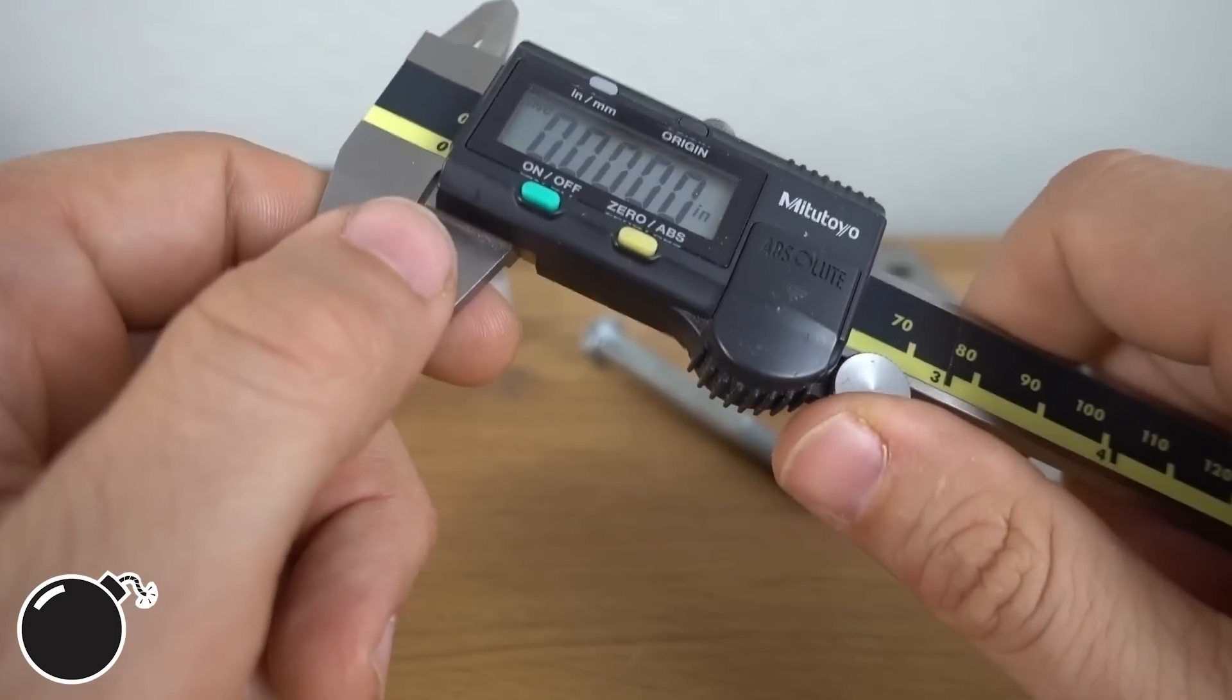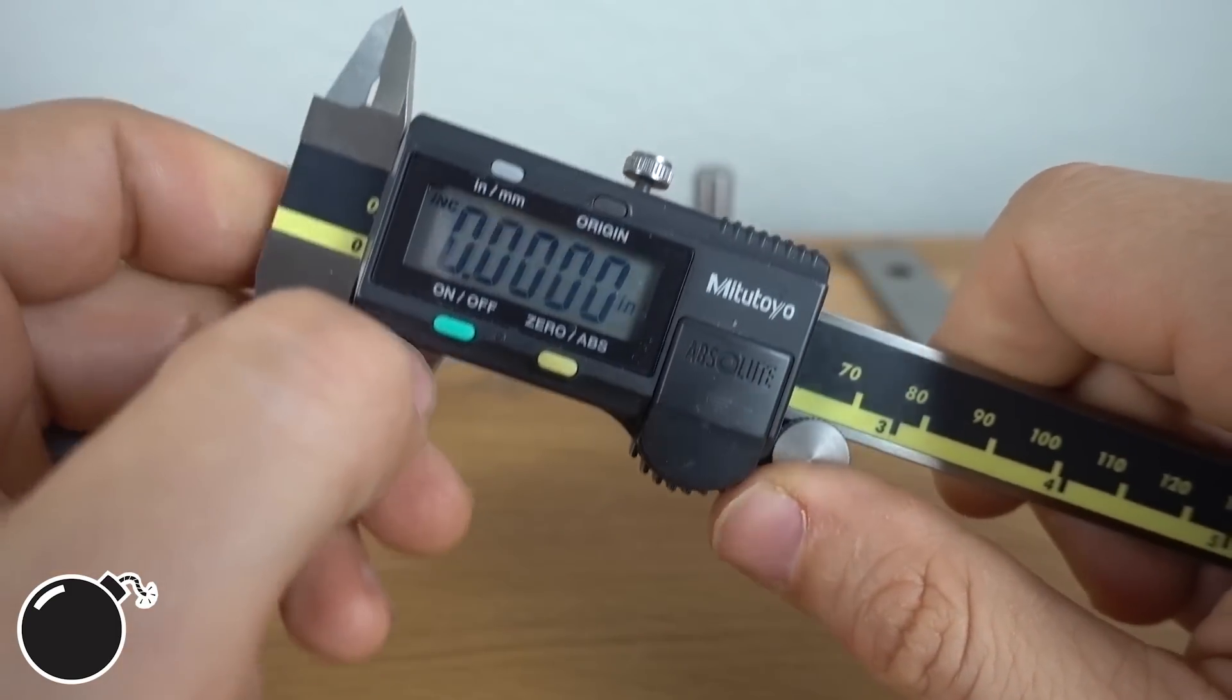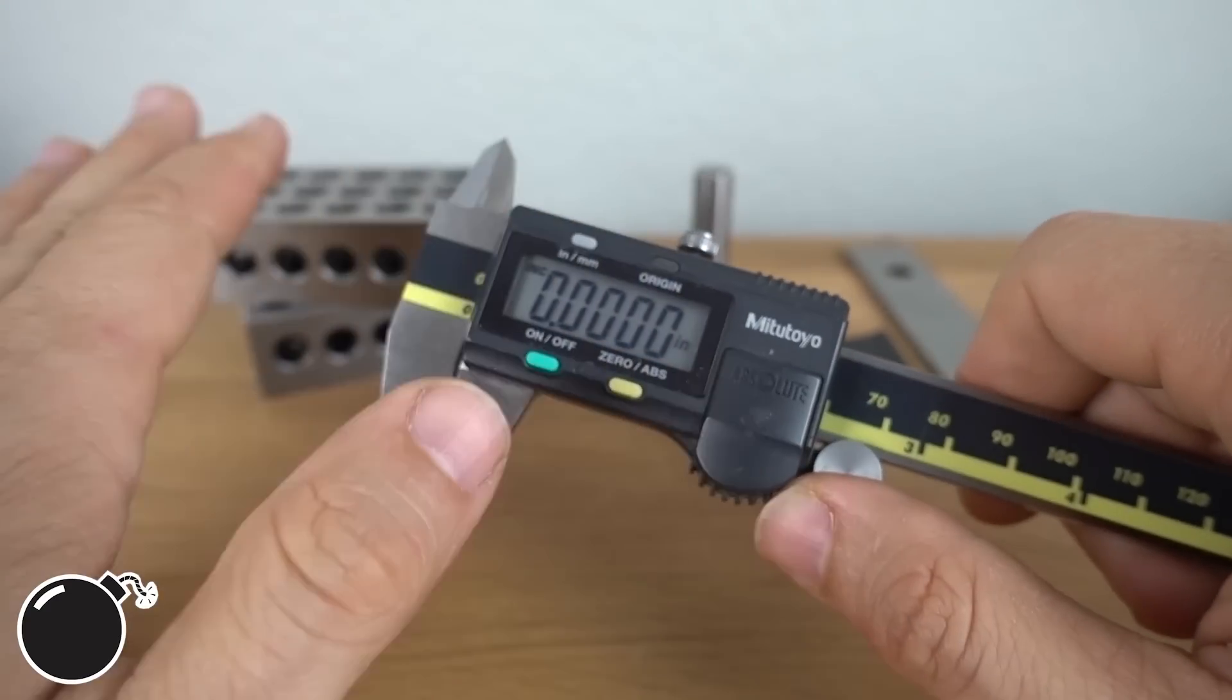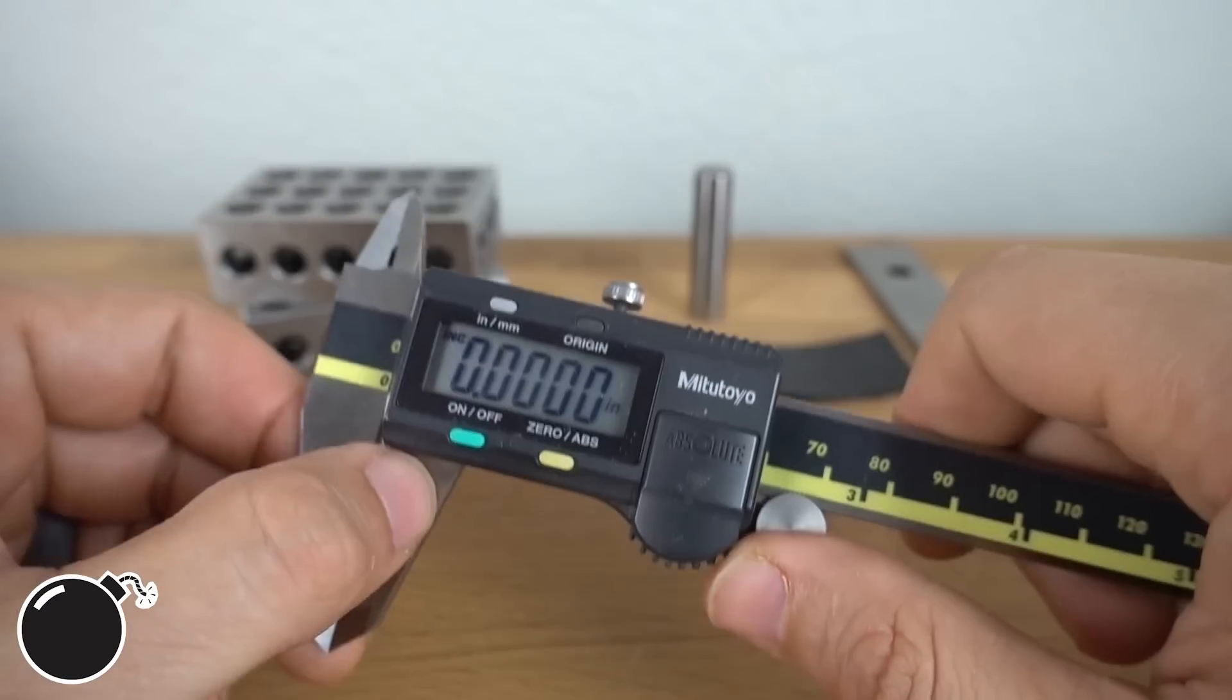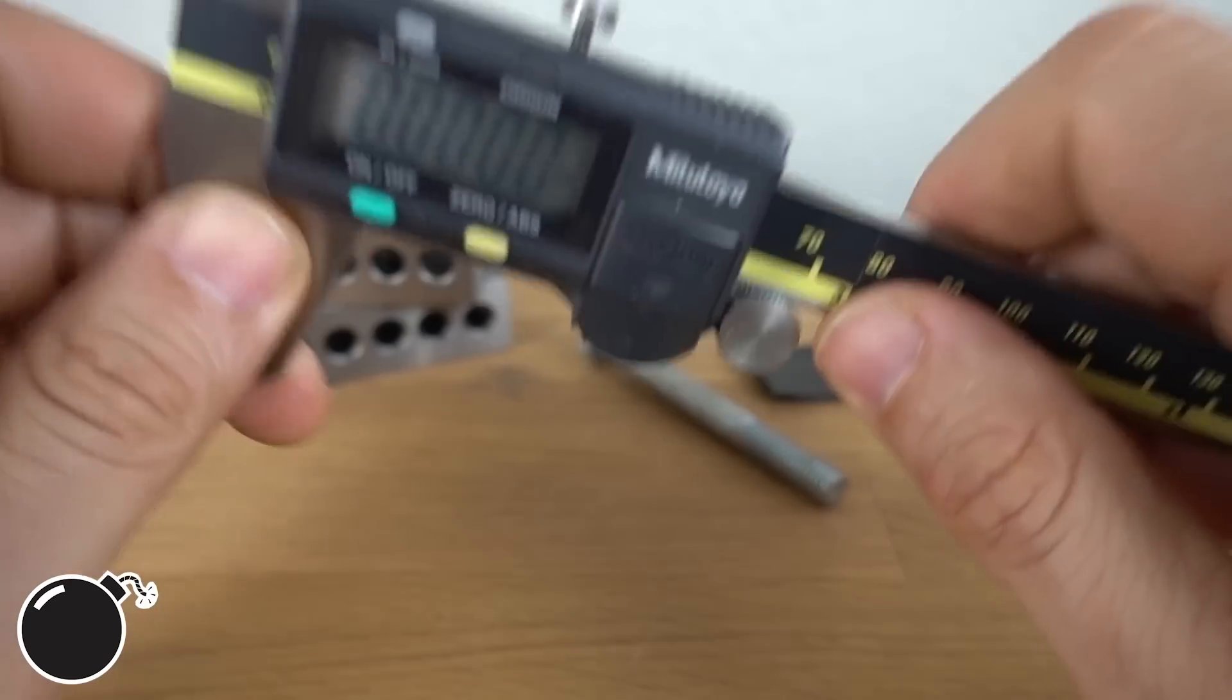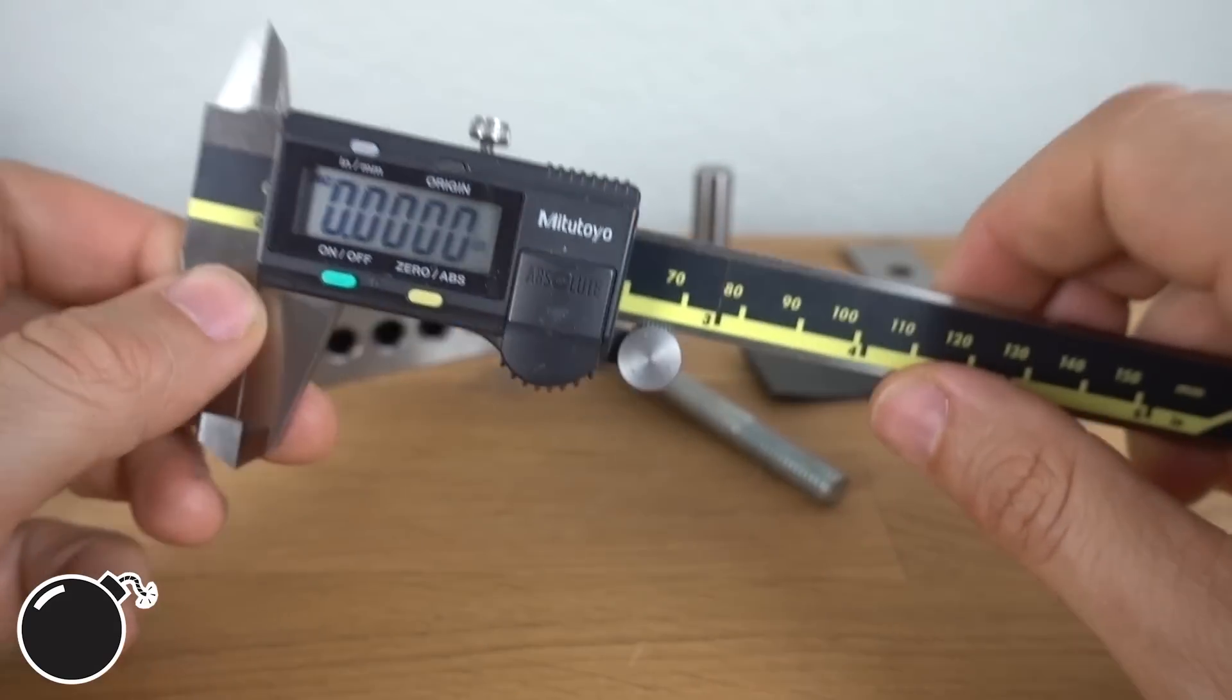When you're looking at different calipers to buy, always check the accuracy, and if they're the cheapos that don't even list it, just stay away. Mitutoyo's are accurate and durable, so you can't go wrong with them. They're by far the ones I see most in engineers' hands.